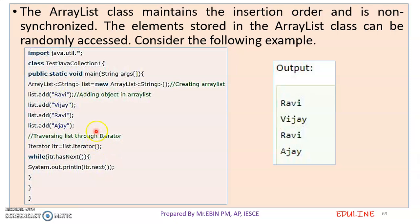This is an iterator method. This method is called on the ArrayList. If you want to use the element, you need to print it. If you want to print it, then print it. The method used to traverse is like an iterator traverse.